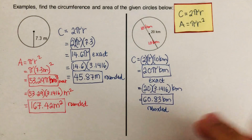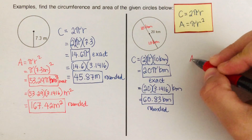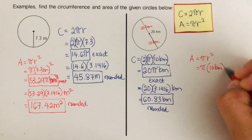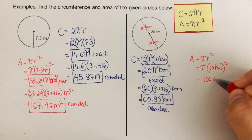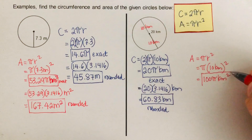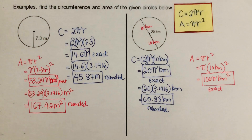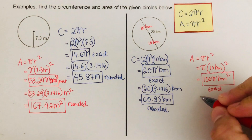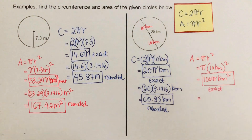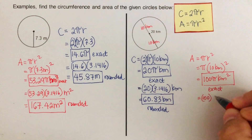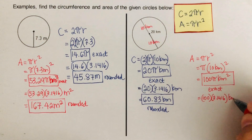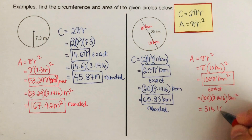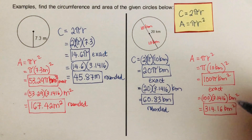Now for the area: A = πr². We have π times 10 kilometers squared. 10 squared is 100, so the exact value is 100π kilometers squared. To find the rounded value, we multiply 100 by 3.1416, which is already in kilometers squared, giving us 314.16 kilometers squared. That is our rounded value.